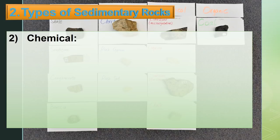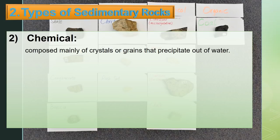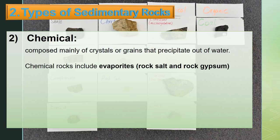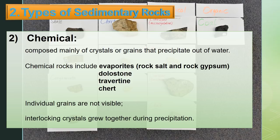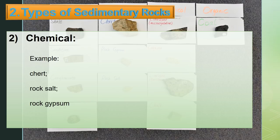Second, chemical — composed mainly of crystals or grains that precipitate out of water. Chemical rocks include evaporites such as rock salt and rock gypsum, dolomite, travertine, and chert. Individual grains are not visible. Interlocking crystals grow together during precipitation. Examples are chert, rock salt, and rock gypsum.